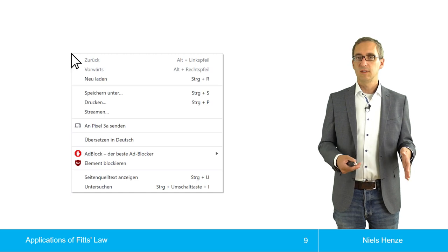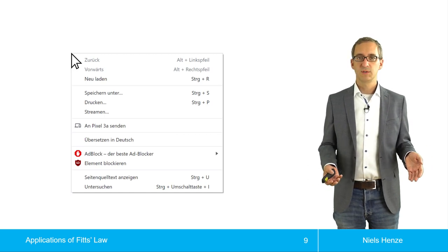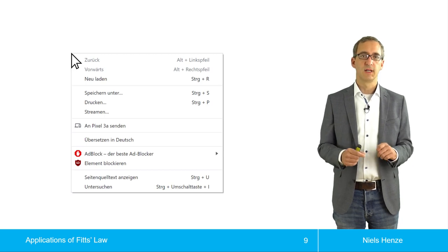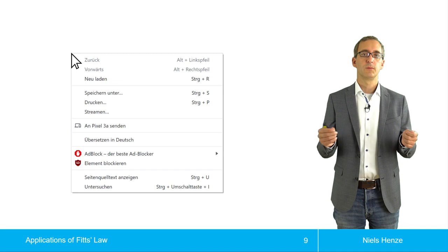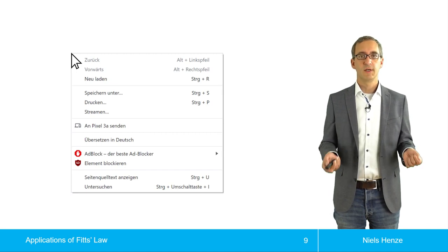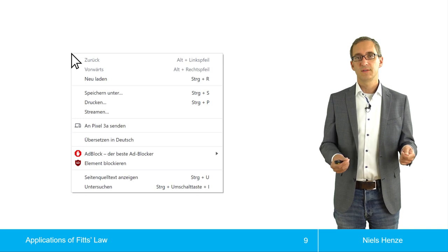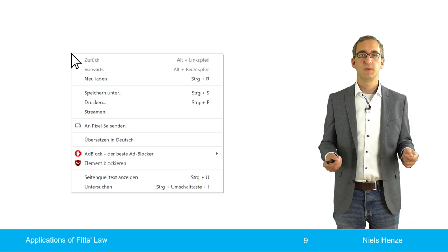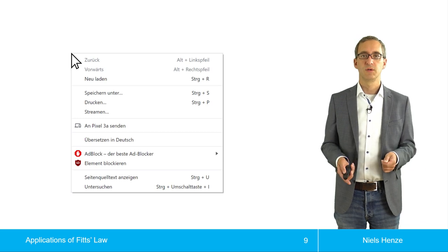The context menu differs from regular menus, which are typically located at the top of the window or screen. For regular menus, the location always stays the same, so the distance varies depending on where the mouse pointer is.